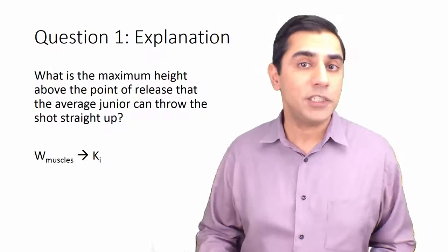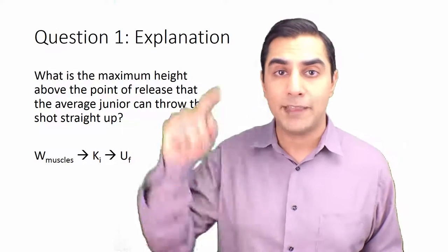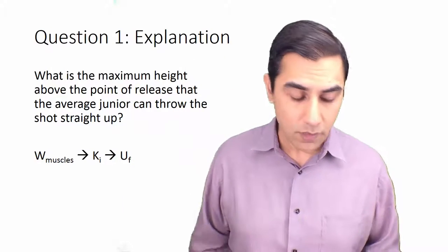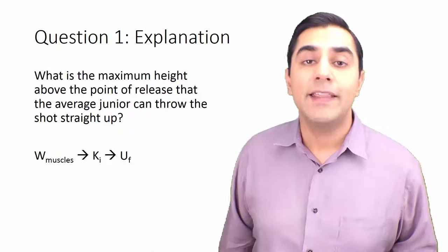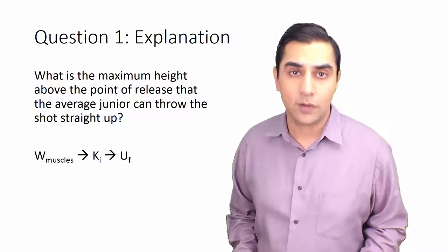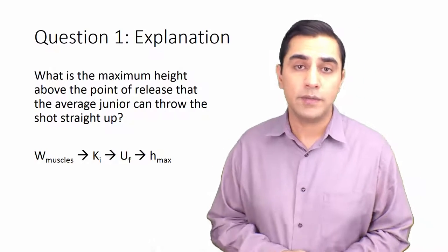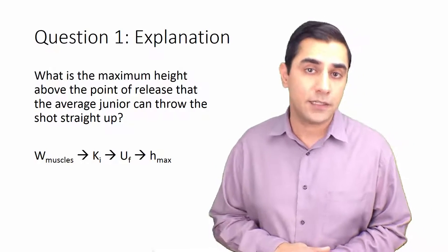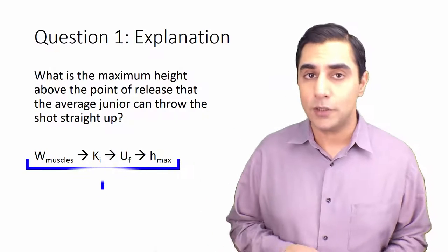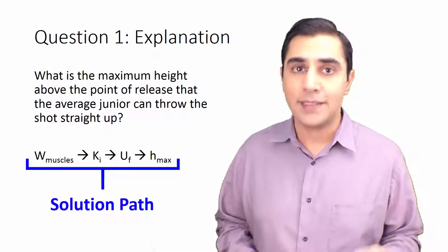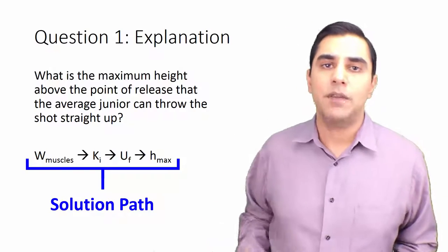Since there is no friction, that's also going to be exactly equal to the maximum potential energy the object will have at the peak of the parabola — even though that's a skinny parabola because it's just up and down. That gives us the final maximum height achieved by the projectile. So the series of connections — work of the muscles → kinetic energy → potential energy → change in height — that is the solution path, which is the logical chain that connects the givens to the final answer.